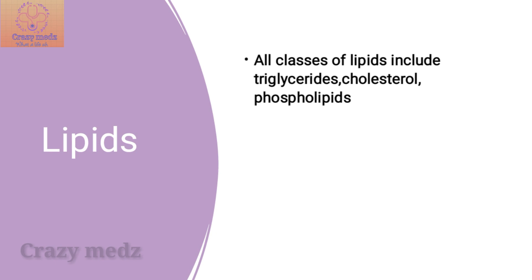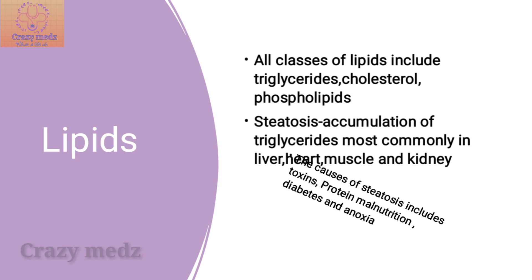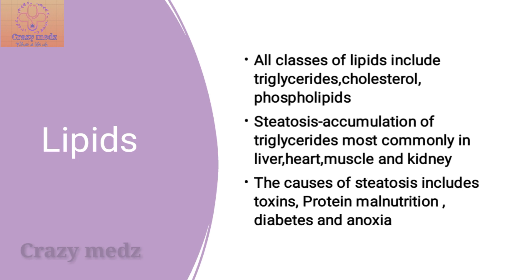All major classes of lipids can accumulate in cells, which includes triglycerides, cholesterol, cholesterol esters, and phospholipids. Steatosis is the abnormal accumulation of triglycerides within parenchymal cells, most commonly in the liver, heart, muscle, and kidney. The causes of steatosis include toxins, protein malnutrition, diabetes, and anoxia.